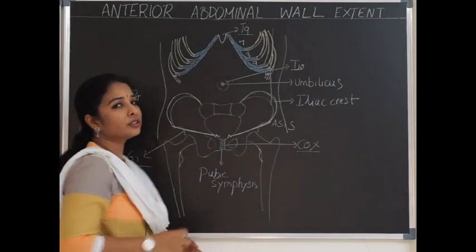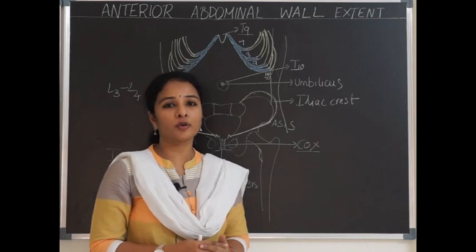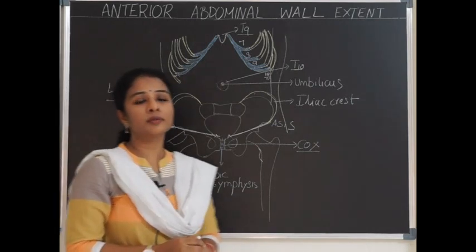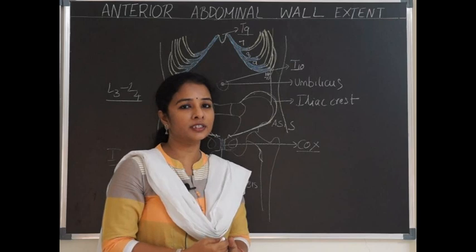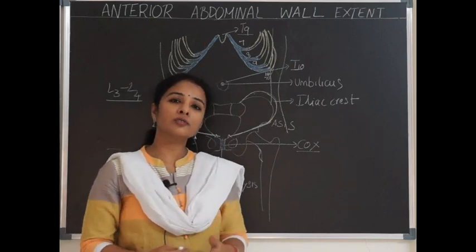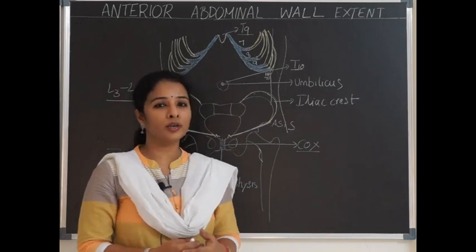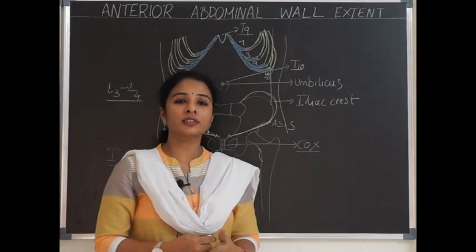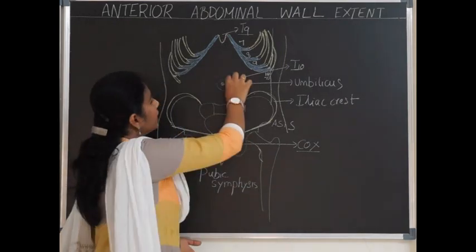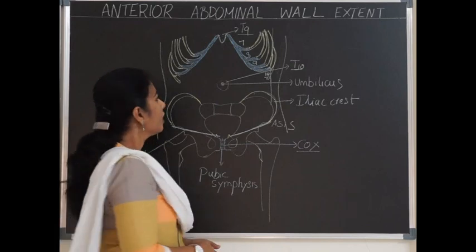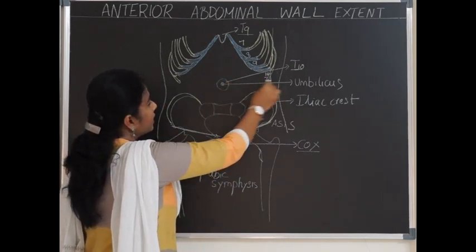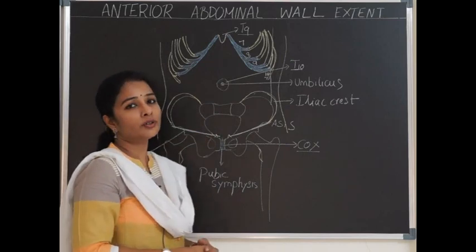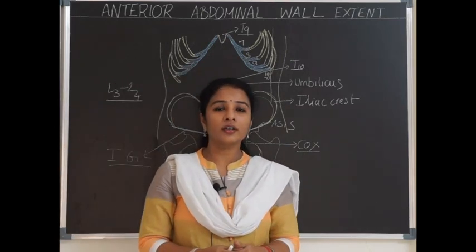The umbilicus is the most important landmark in the anterior abdominal wall. In healthy individuals, it lies at the level of the intervertebral disc between L3 and L4. In infants and obese individuals with a pendulous abdomen, it is at a slightly lower level. The umbilicus is considered a watershed line because venous and lymphatic drainage differs above and below it. The nerve supply around the umbilicus is from the spinal segment T10.